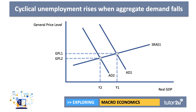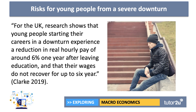We can show the effect of a recession using a simple aggregate demand and supply diagram. Here we show an inward shift of aggregate demand causing a fall in real national output. That leads to a fall in employment because the demand for labour is derived from the demand for output. The risk is that as unemployment goes up, certain groups, certain regions, and certain industries are more badly affected than others.